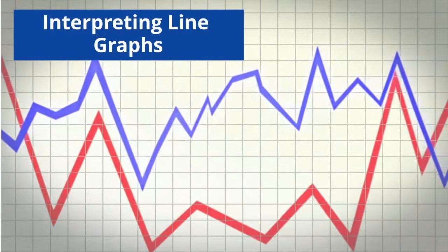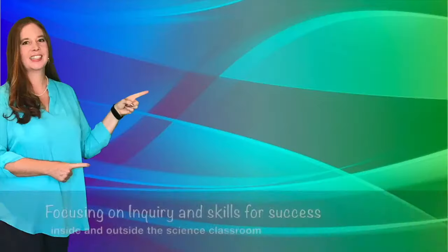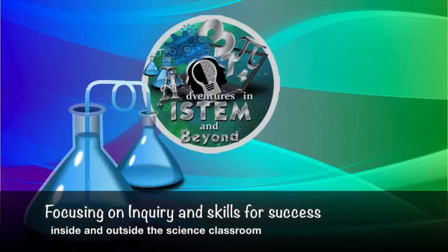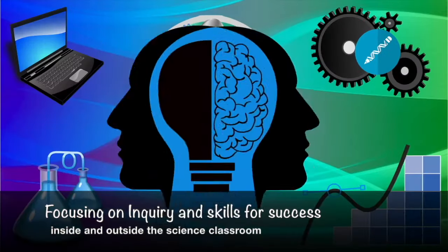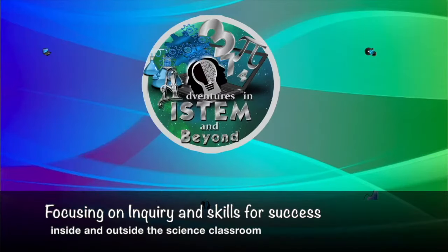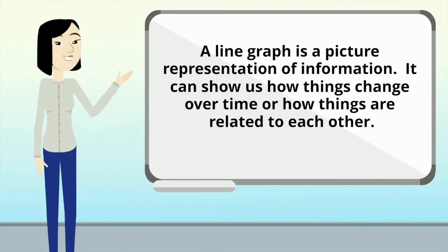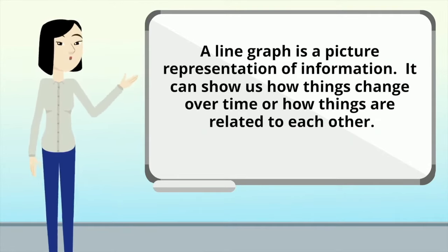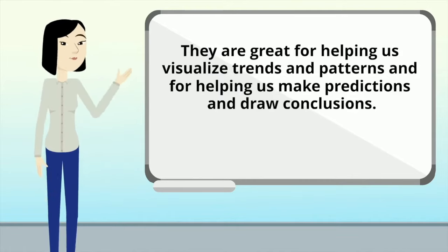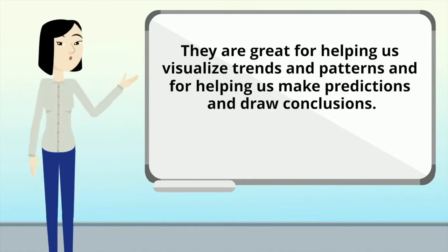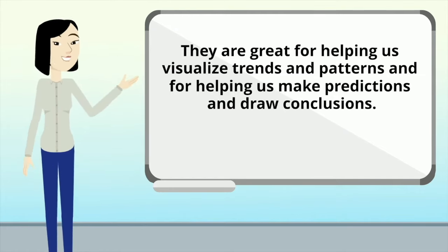Interpreting Line Graphs. A line graph is a picture representation of information. It can show us how things change over time or how things are related to each other. They are great for helping us visualize trends and patterns and for helping us make predictions and draw conclusions.